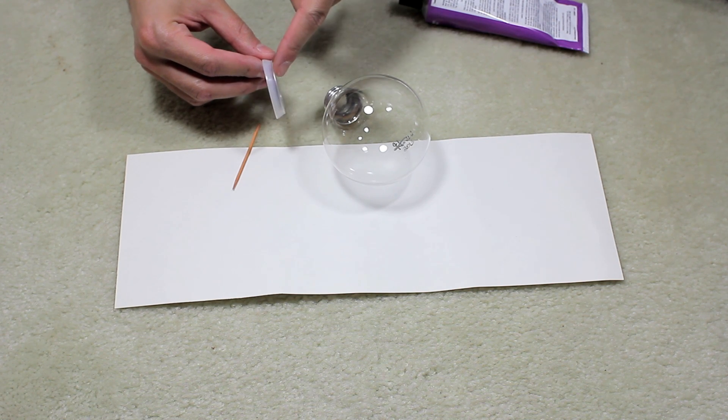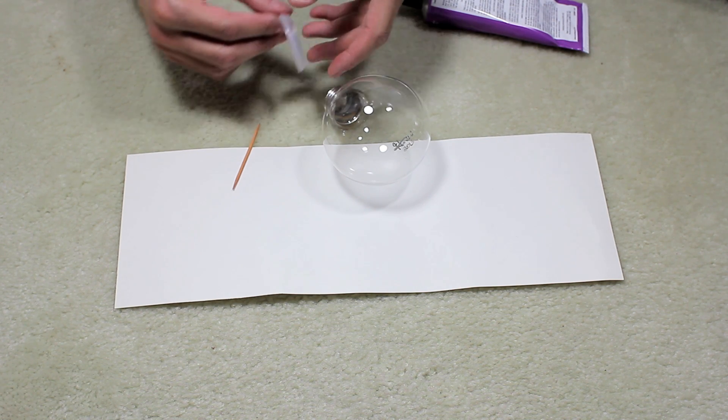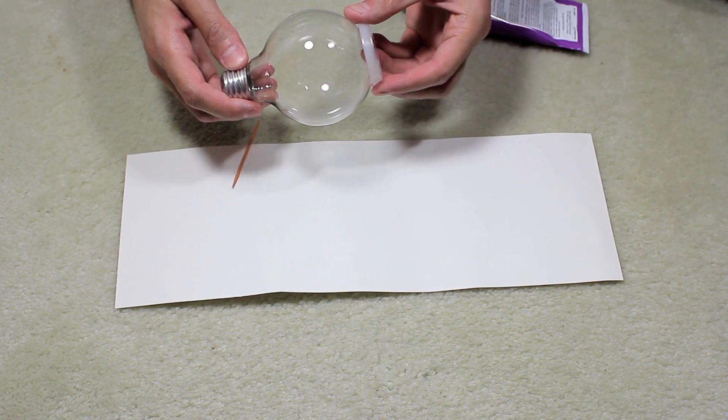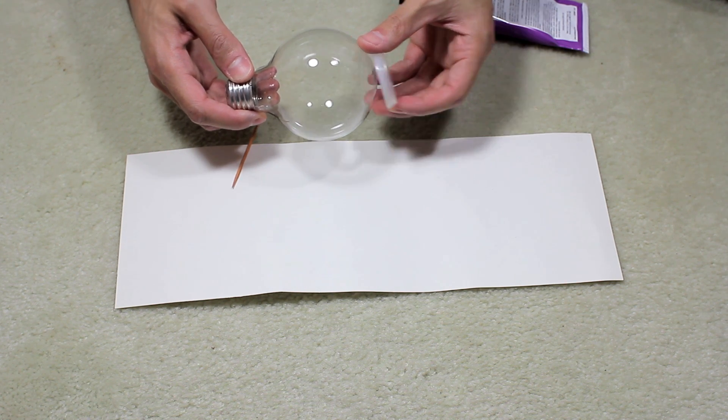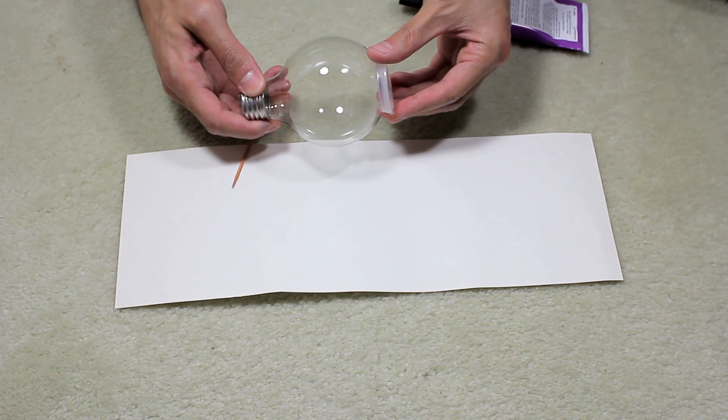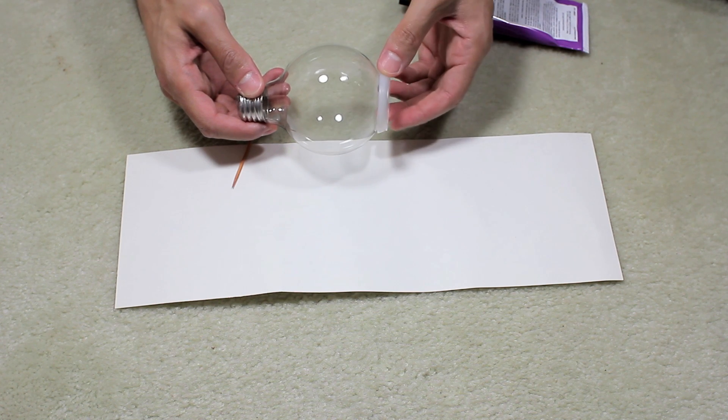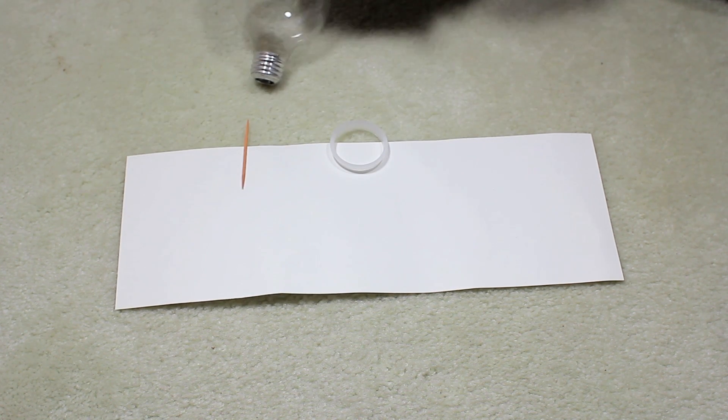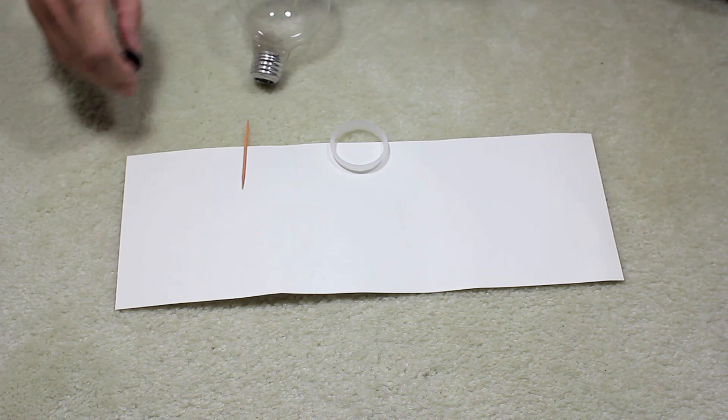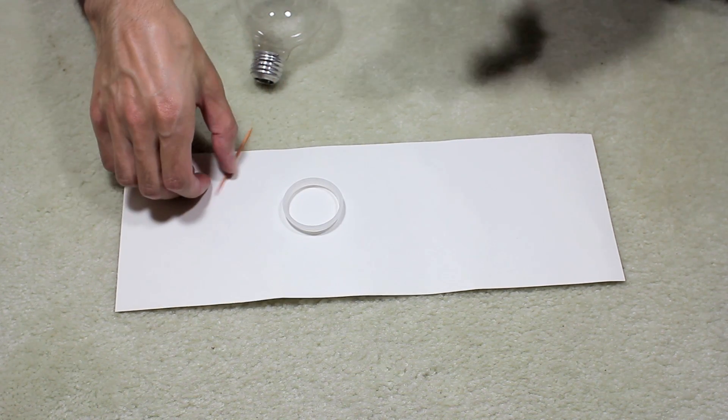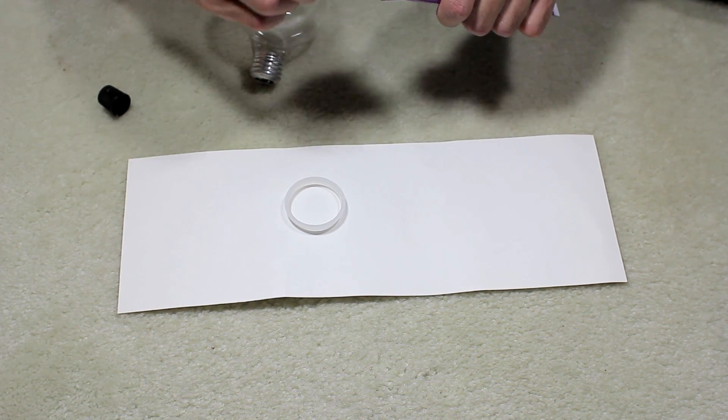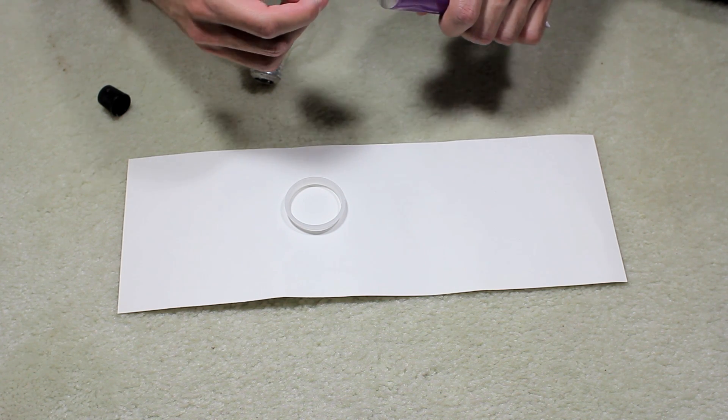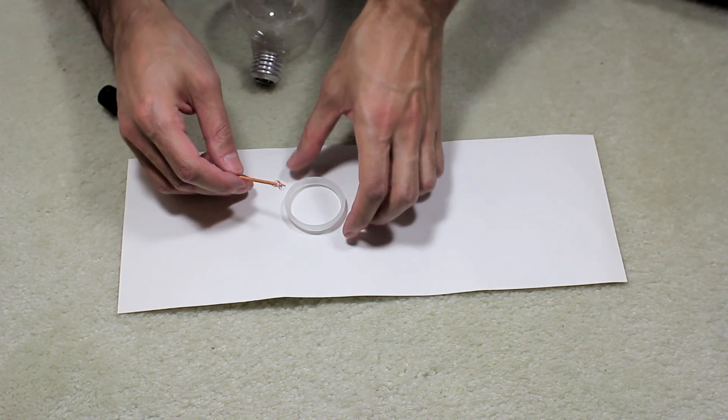Wipe the bulb with a clean cloth. Make sure you know what side of the poly washer will be in contact with the light bulb. Using the toothpick, apply some glue to the poly washer.